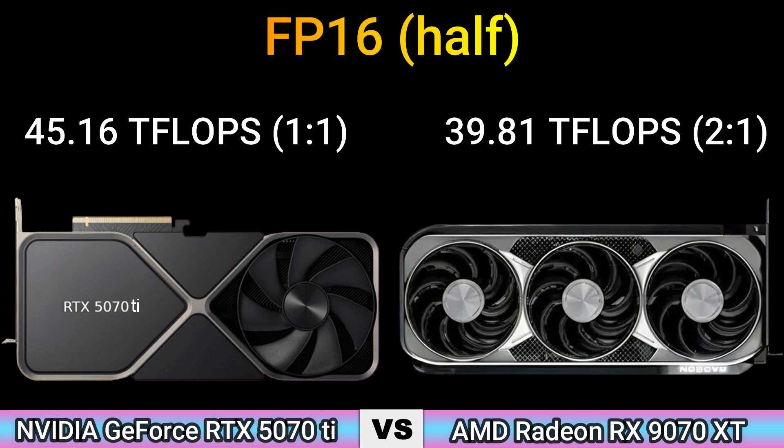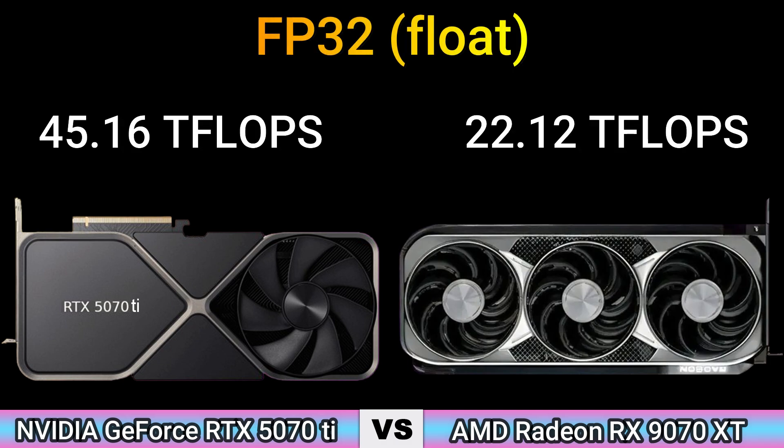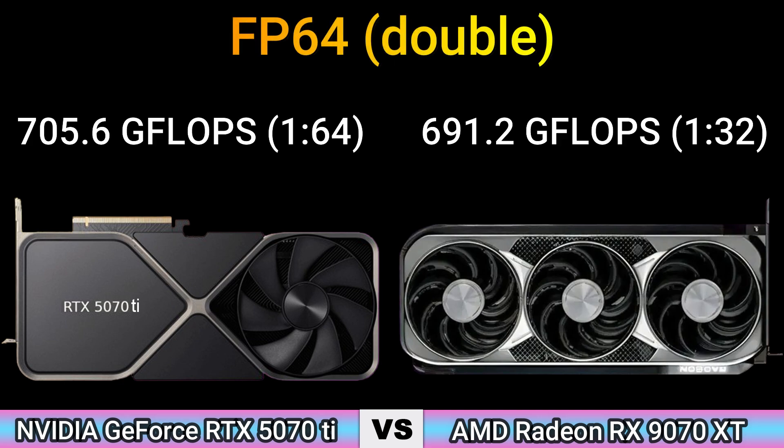FP16 performance: 45.16 TFLOPS at 1:1 ratio and 39.81 TFLOPS at 2:1 ratio. FP32 performance: 45.16 TFLOPS and 22.20 TFLOPS. FP64: 705.6 GFLOPS at 1:64 ratio and 691.2 GFLOPS at 1:32 ratio.